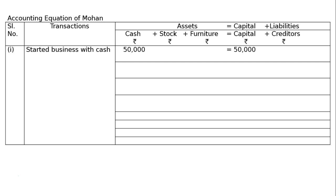Second transaction: purchased goods for cash. Cash is going out and stock is coming in. Hence, deduct 30,000 from cash and add 30,000 to stock. This plus/minus 30,000 equals zero in capital, so capital remains unchanged.